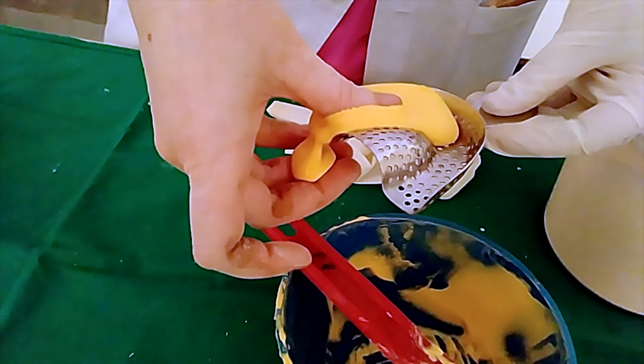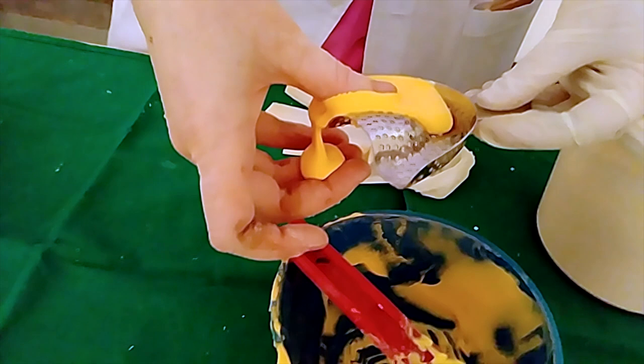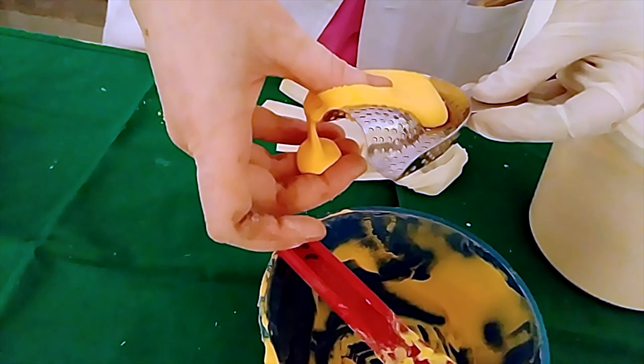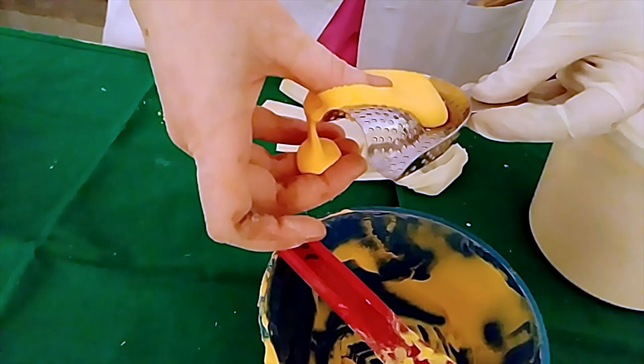Once the material sets, we can remove the finger from it to examine the impression. The setting time is dependent upon many factors such as water-powder ratio, temperature, and the temperature of the water. This is the way the impression should look - it should be devoid of any porosities.